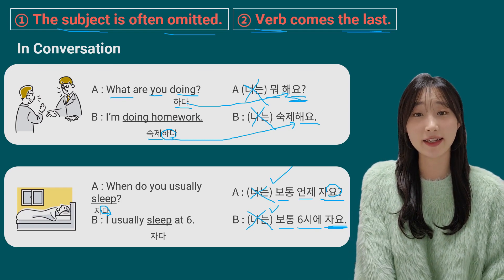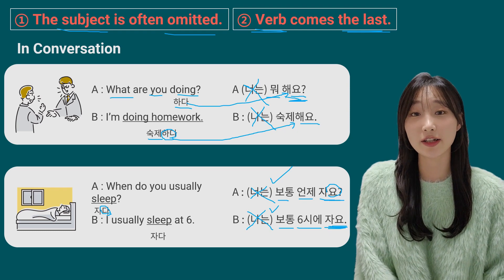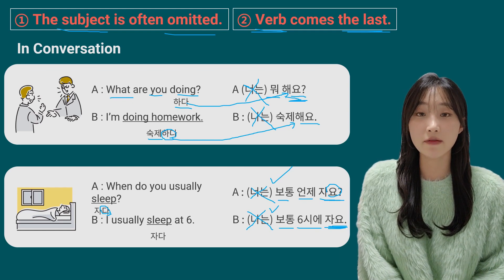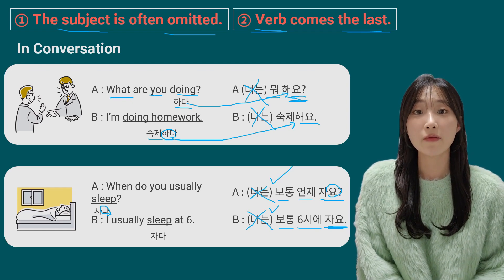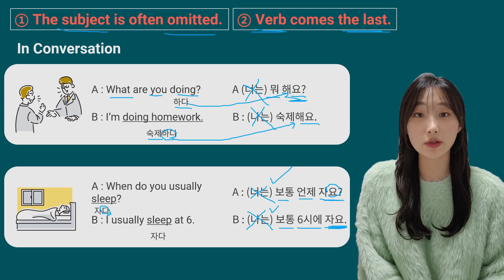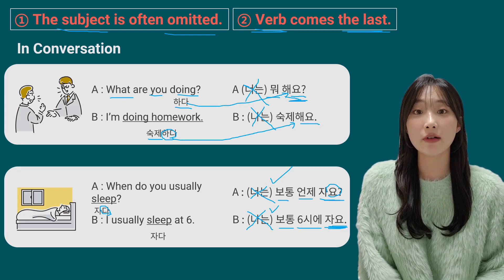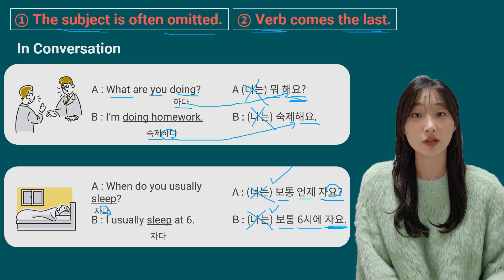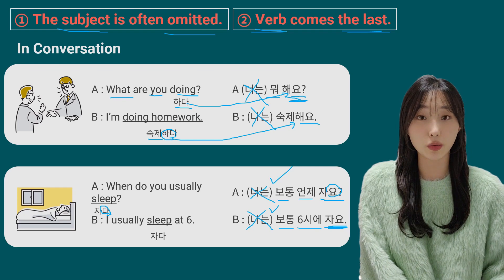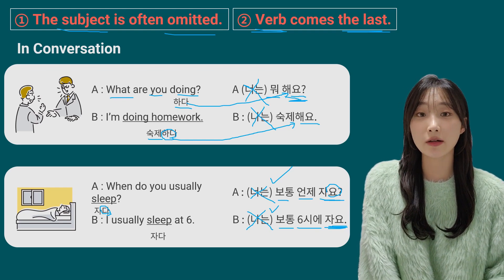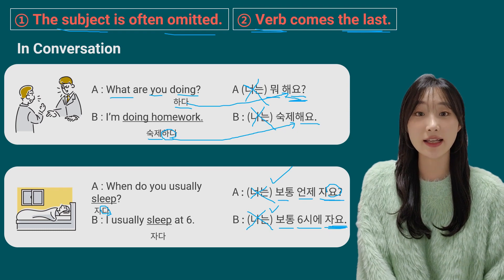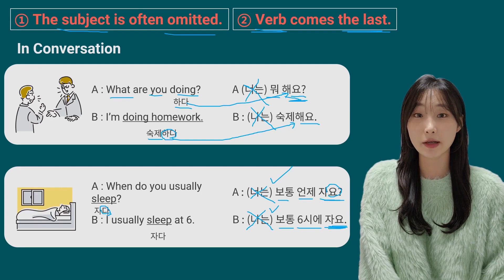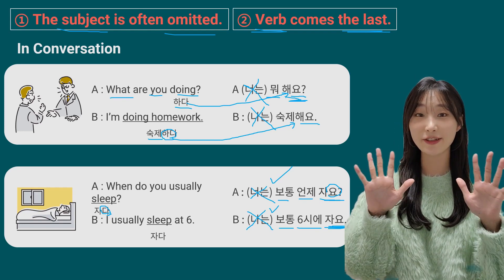Good job, guys. You might think there are so many rules to remember, but remember: most Korean verbs and adjectives have a final consonant, so you follow the first rule, which is very simple. Also, many verbs end with 하다, so you just add 해요. If you remember these, the second rule doesn't have many cases. Just practice as much as possible. Thank you for watching. Please subscribe and like this video. 감사합니다.